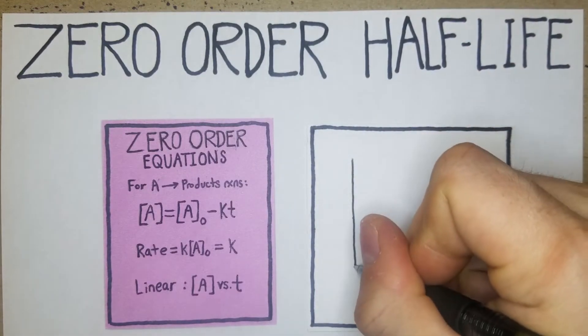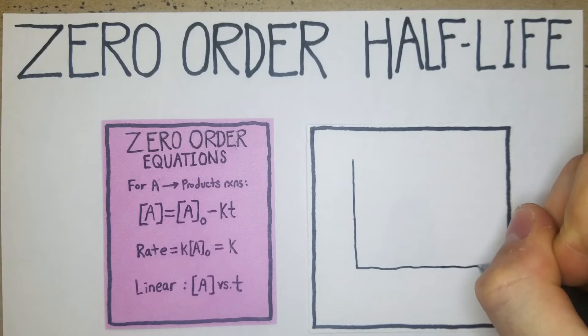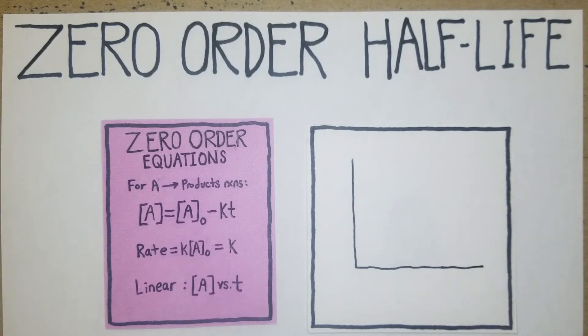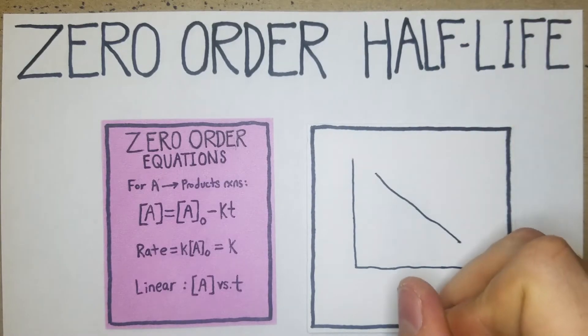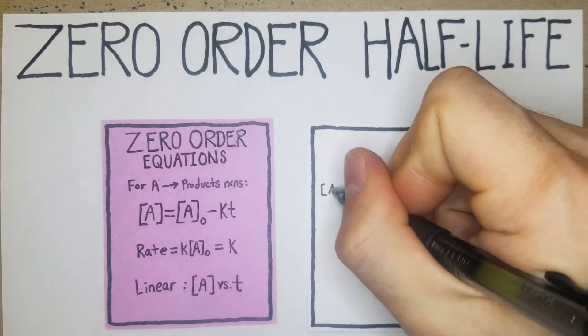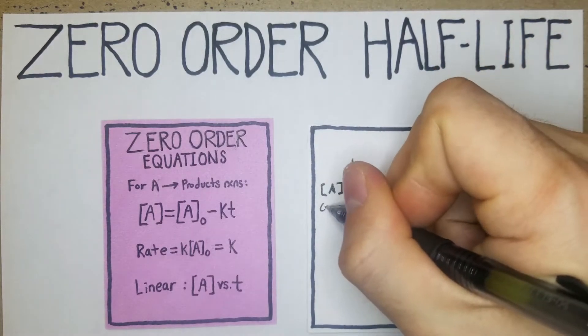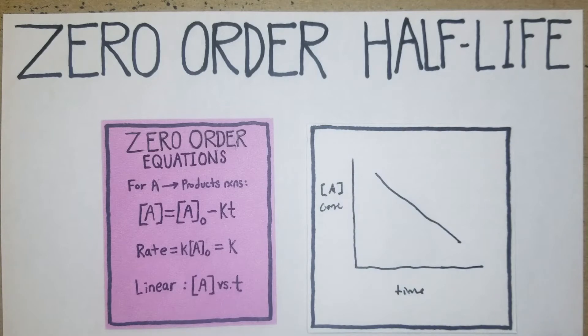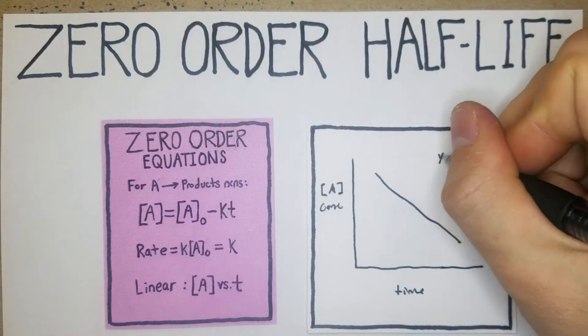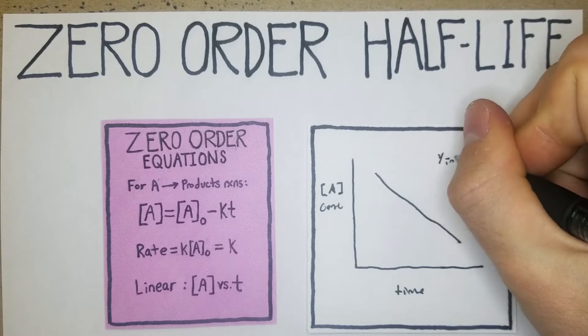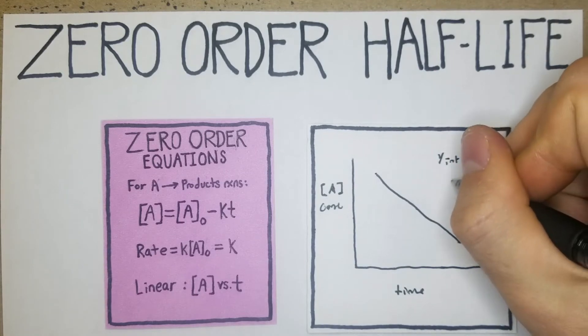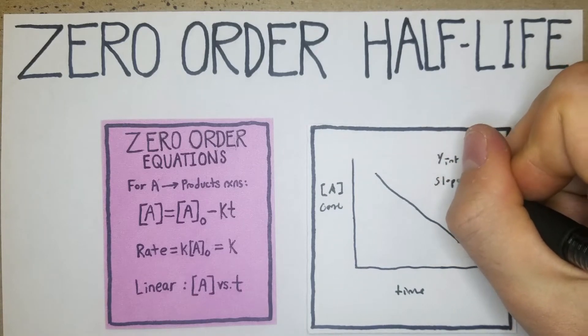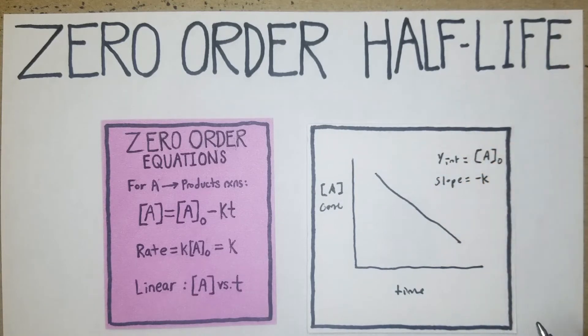So essentially for zero order, if we have a slope like this and we'd have time down here and the concentration of say A over here, what we have is our y-intercept is going to equal A₀, and then this slope would be negative K.